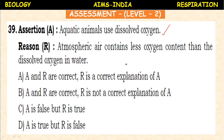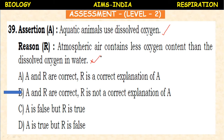The assertion — aquatic animals use dissolved oxygen — is 100% correct. The reason — atmospheric air contains less oxygen content than dissolved oxygen in water — is a wrong statement, because the atmosphere contains more oxygen compared to oxygen dissolved in water. So here assertion is correct but reason is false. If assertion is correct and reasoning is incorrect, reason is not a correct explanation of assertion. Dissolved oxygen is less in water compared to atmospheric air.